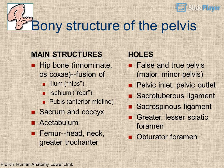The bony pelvis consists of the hip bone (innominate, os coxa) — a fusion of ilium, ischium, and pubis — meeting at the anterior midline, plus the sacrum and coccyx. Key structures include the acetabulum, femur head, neck, greater trochanter, false and true pelvis (major/minor), pelvic inlet and outlet, sacrotuberous ligament, sacrospinous ligament, greater and lesser sciatic foramina, and obturator foramen.